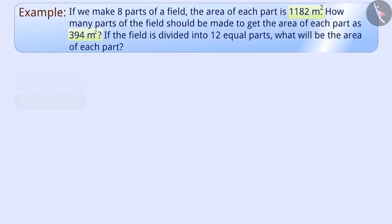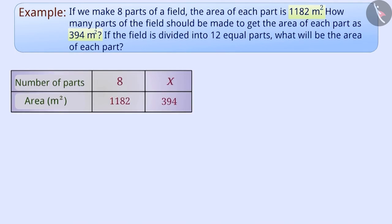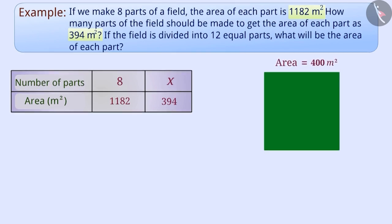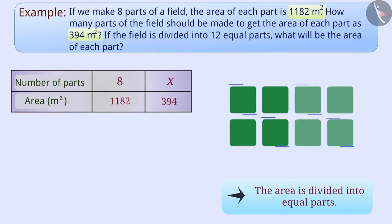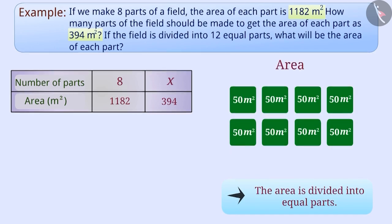We can show the given information in a table like this, where x represents the number of parts of area 394 m². If a shape is divided into equal parts, then the area of the shape is divided equally into many parts. The more parts there are, the less will be the area of each part. In this way, we can say that the number of parts and the area of the parts are inversely proportional to each other.